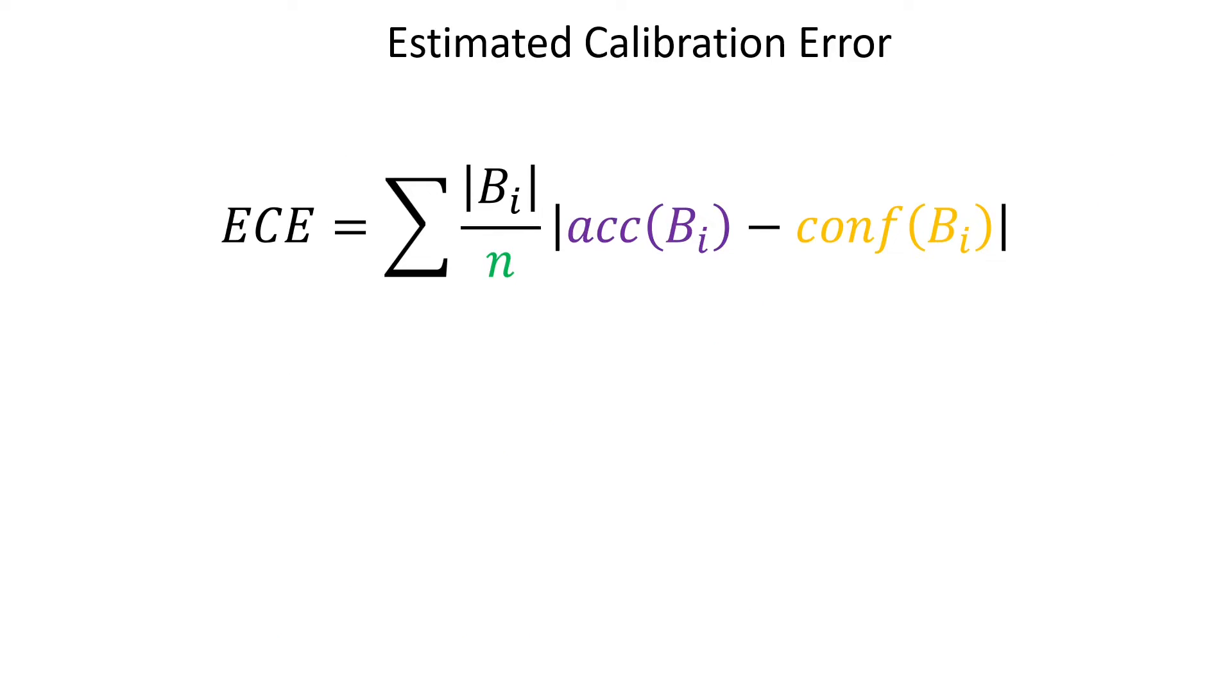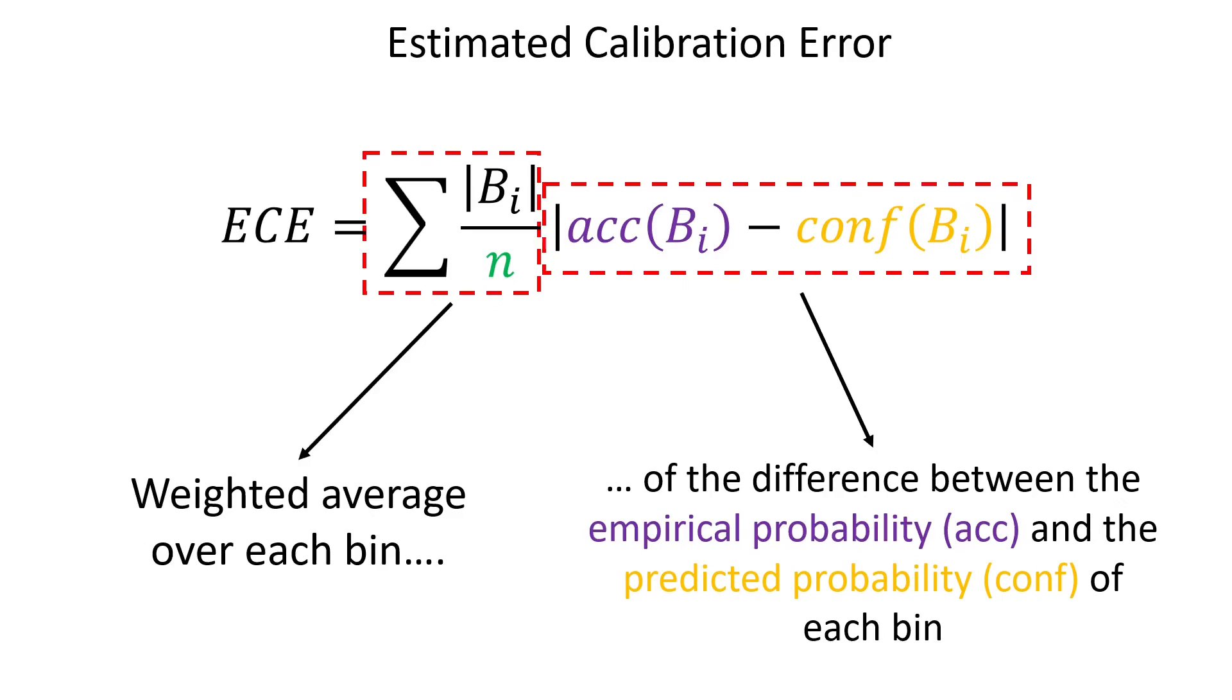The ECE is nothing more than a score that summarizes the reliability curve and it is computed by taking the weighted average over each bin. Basically, the sum over the number of samples in bin Bi, divided by the number of samples and multiplied by the absolute value of the difference between the empirical probability of the samples in that bin or the accuracy and the predicted probability of the samples in that bin or the confidence.